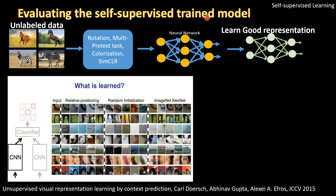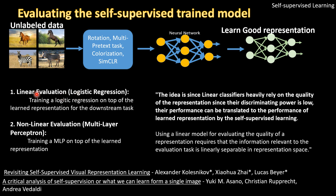How do you evaluate whether a self-supervised model has learned good representations? One idea is to use KNN: in the feature space, you query an input image and retrieve similar images. This pretext task called relative positioning shows the model learned features well — compared to random initialization and ImageNet pre-training. Another way is to use a linear classifier — logistic regression or a multi-layer perceptron — and perform the actual task to see how well it does.